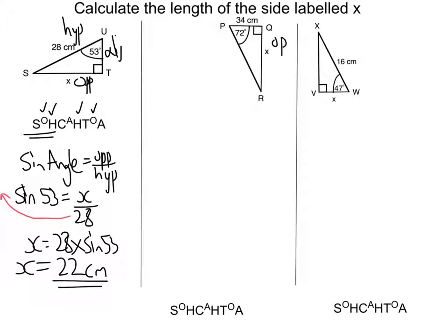So let's move on to the second example. So first, let's label our sides with the opposite, the hypotenuse, and the adjacent. Then once we've labeled our sides, then we start ticking.